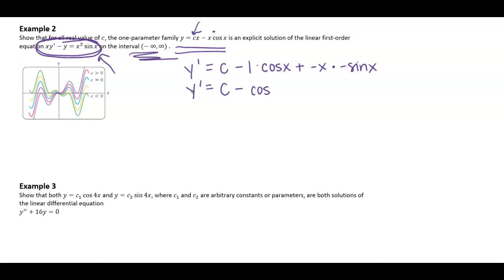c minus cosine x, and then it looks like this is going to be plus x sine x. All right, let's plug that in to our differential equation and make sure that I get equality here. So x, I'm going to substitute in my y prime minus y, the original solution curve. And let's check and make sure that is indeed equal to x squared times sine x.